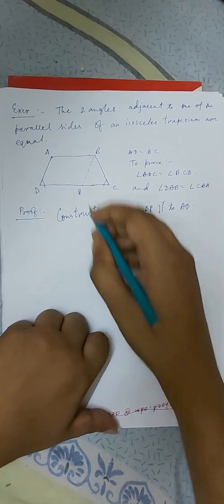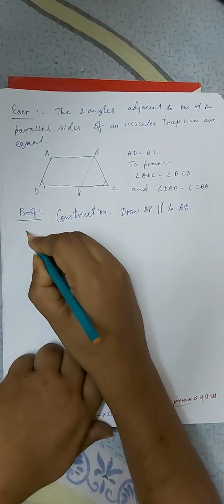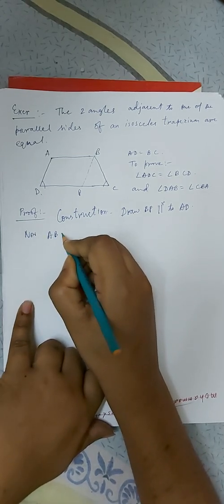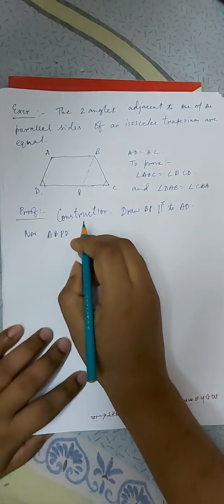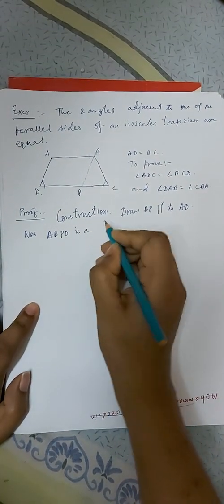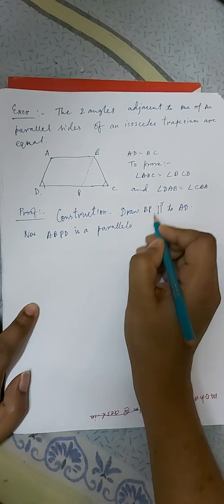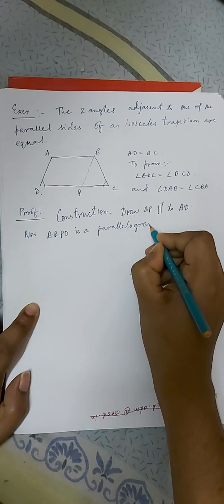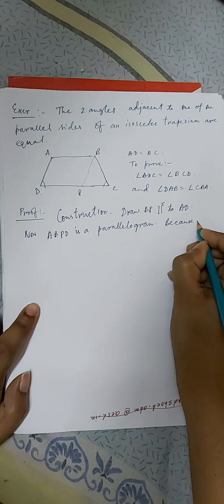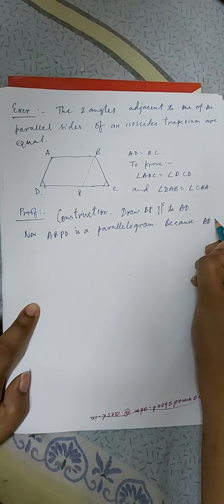Now if this is ABPD, it is a parallelogram. Why is it a parallelogram? Because opposite sides are parallel.